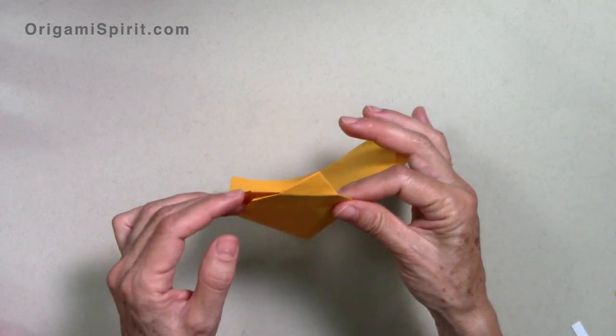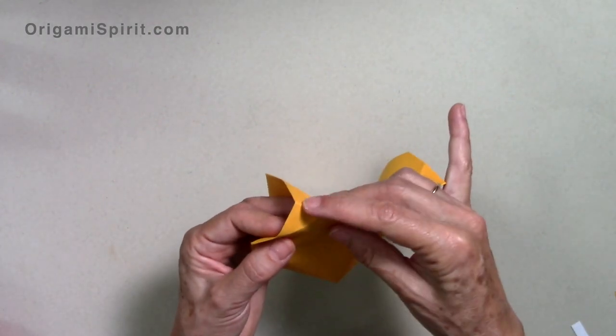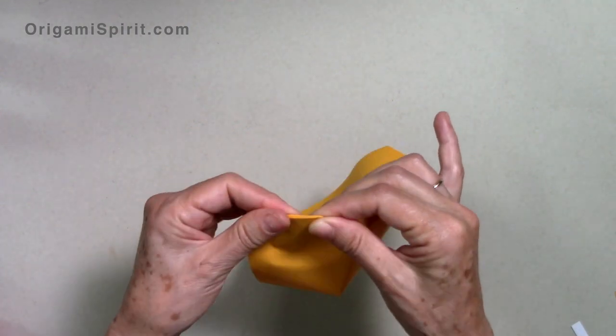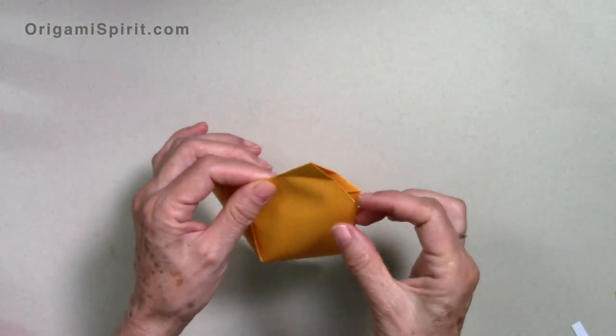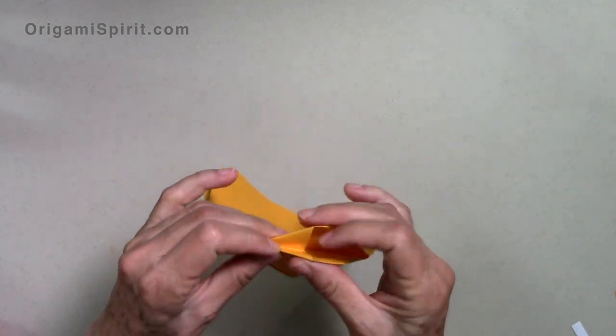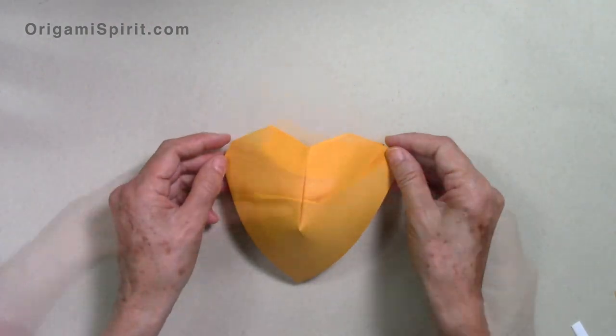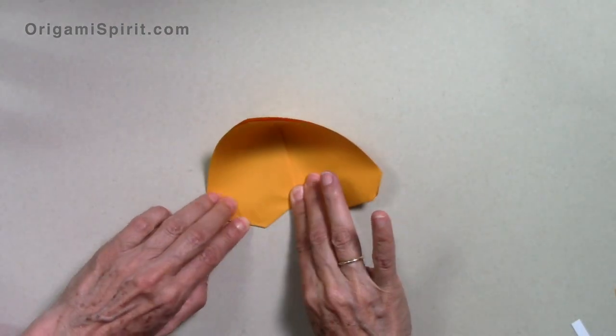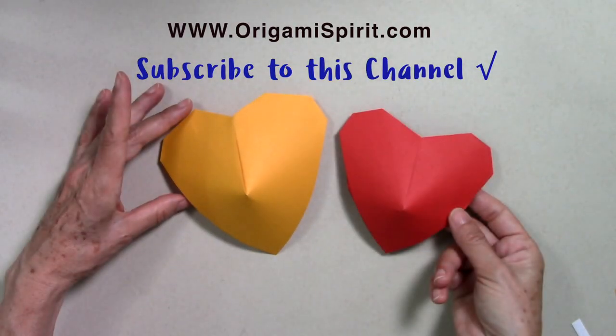And now, we insert our finger and press that short area and reverse it. So, we do an inside reverse fold. Same on this side. We can reinforce all the folds. We have the heart.